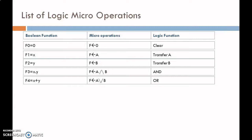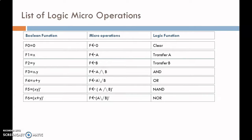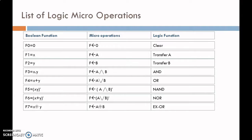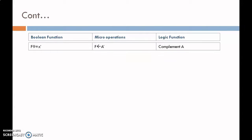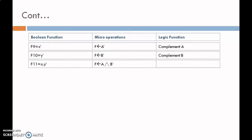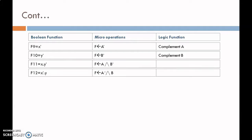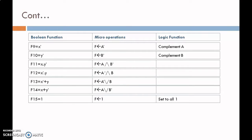The micro operations include: OR micro operation A or B; NAND micro operation written as (A and B)'; NOR micro operation written as (A or B)'; EXCLUSIVE OR micro operation A XOR B; EXCLUSIVE NOR written as (A XOR B)'; COMPLEMENT of A written as A'; COMPLEMENT of B written as B'; then A and B'; A' and B; A' or B; A or B'; and the last micro operation is SET TO ONE, meaning set all bits to 1.